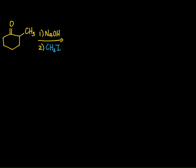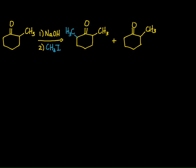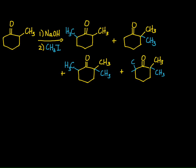If we take 2-methylcyclohexanone with sodium hydroxide to deprotonate, followed by methyl iodide, we certainly get methylation on the left. We can also get methylation on the right. Furthermore, we can even get further alkylation — a methyl group on the left and on the right — and there's still one hydrogen left on the left-hand side, so we can get trimethylation as well. We actually end up getting a mixture of products: 9% of 2,5-dimethylcyclohexanone, 41% of 2,2-dimethylcyclohexanone, 21% of the trimethylcyclohexanone, and only 6% of the tetramethylcyclohexanone.